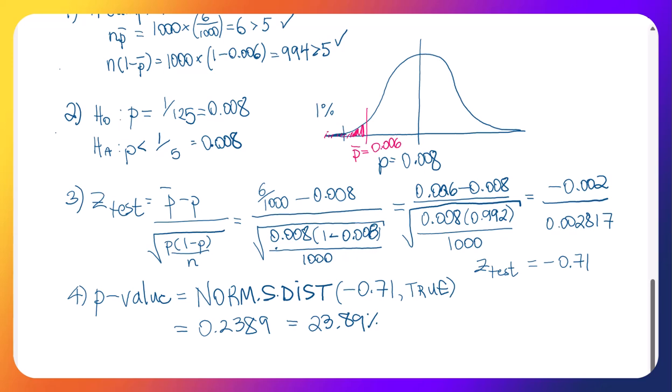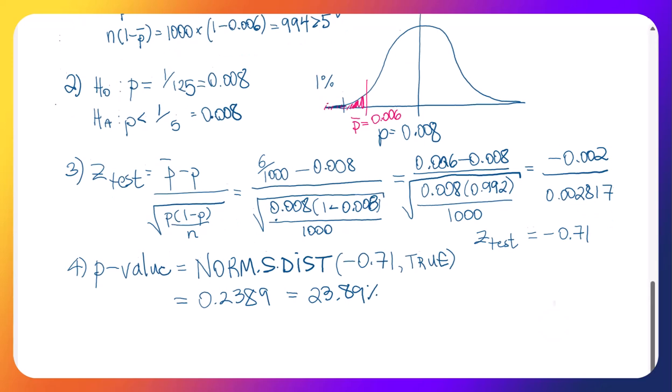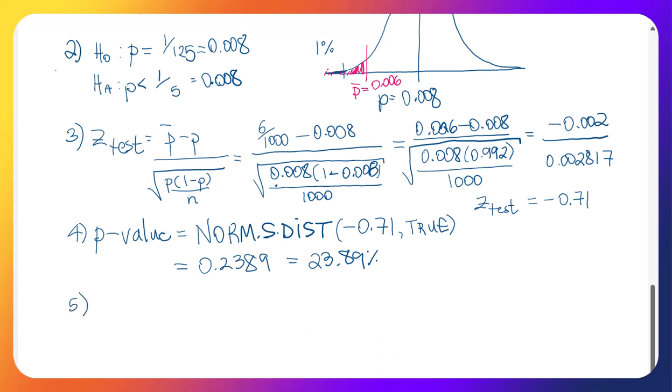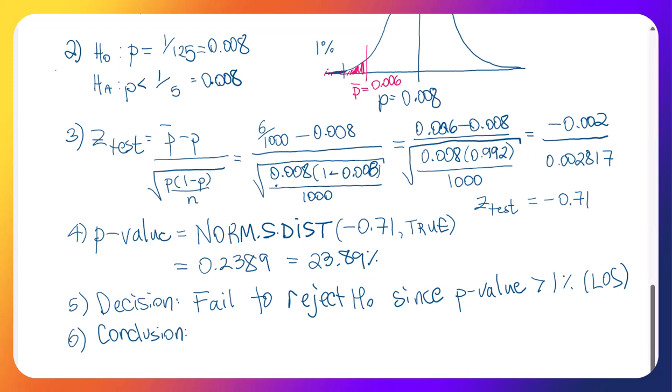So let's just formally kind of finish this hypothesis test here. So keeping going, next thing is to make our decision. In this case, it's going to be to fail to reject H0 since our p value at that 23.89% is much larger than the 1% level of significance that was originally defined. So our conclusion is that there is not enough evidence to conclude that the defective rate has decreased.